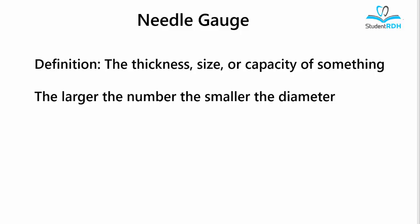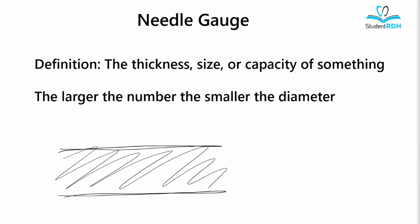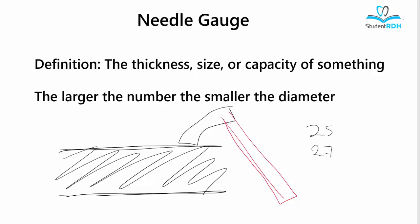By definition, gauge means the thickness of something. The larger the number, the smaller the diameter. But let's think about it this way: you have a piece of metal and a hammer. We are going to pressure this piece of metal — 25 times, 27 times, and 30 times. Which one would give you the thinnest metal? Obviously, the more we pressure it, the thinner it is going to be. So in our case, 30 will give us the thinner diameter.